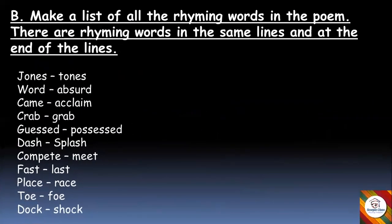Now let's move on to the last exercise — make a list of all the rhyming words in the poem. There are rhyming words in the same line and at the end of lines. The rhyming pairs are: Jones/stones, word/observed, came/acclaimed, crab/grab, guest/possessed, dash/splash, compete/meet, fast/last, place/race, toe/foe, dock/shock. These are the words which rhyme with each other — the same sounds at the end of the words are the rhyming words of the poem.